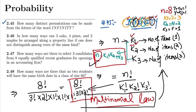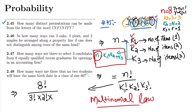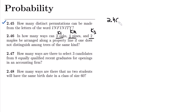Now moving to question 2.46: in how many ways can 3 oaks, 7 pines, and 2 maples be arranged along a property line if one does not distinguish among trees of the same kind? Again we have k1, k2, and k3. Writing for question 2.46: k1 equals 3, k2 equals 4, and k3 equals 2.